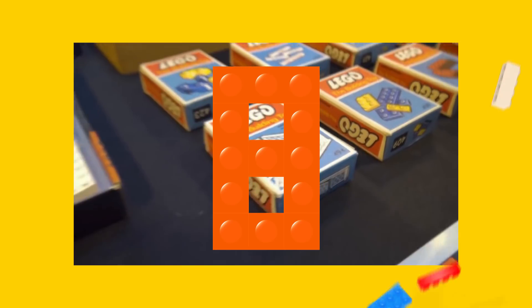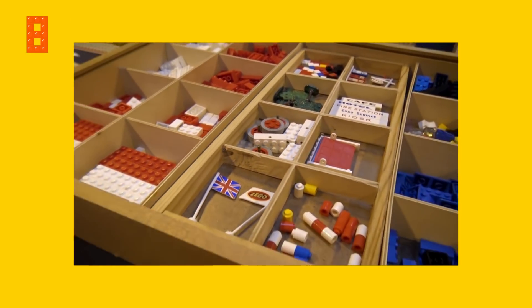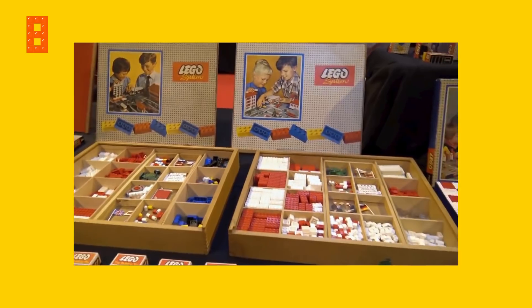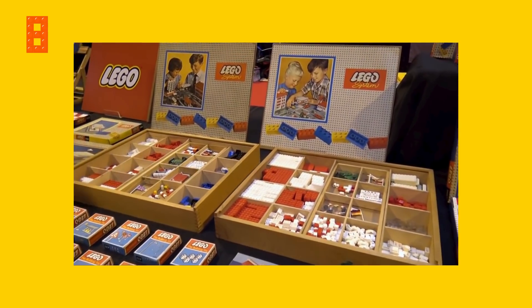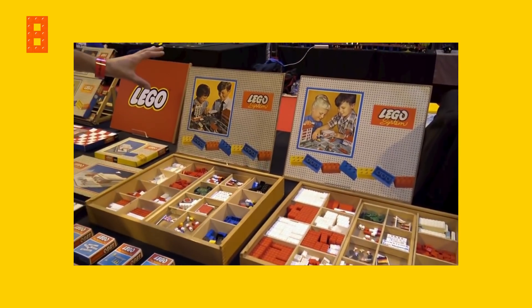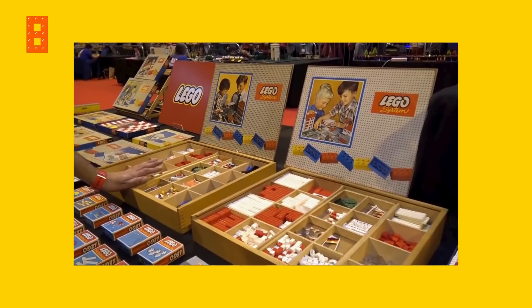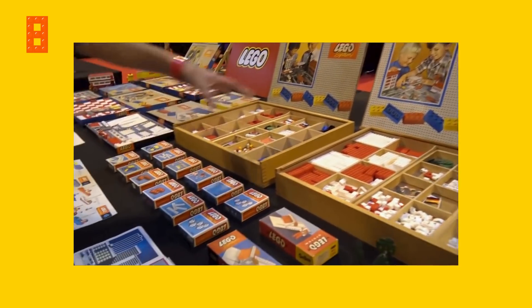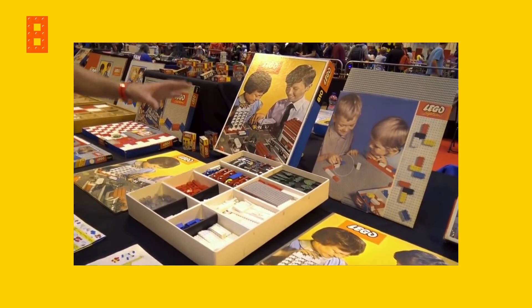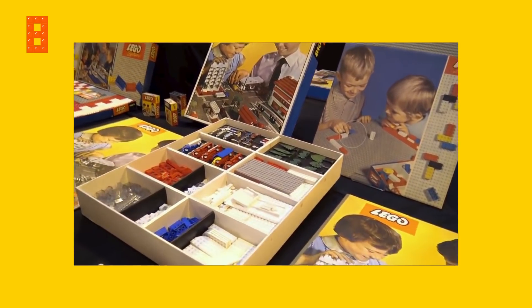Number 8. Lego bricks are not only perfectly compatible, they're also just plain perfect. Only 18 bricks per million are considered defective. Two thousandths of a millimeter mismatch is already considered a disaster, which is pretty impressive, right? Thumbs up for the perfectionists at Lego.